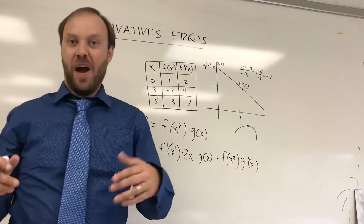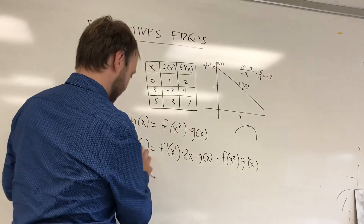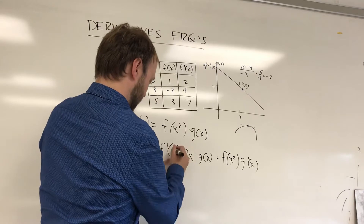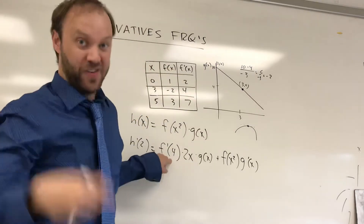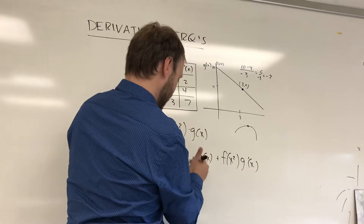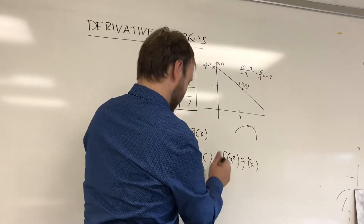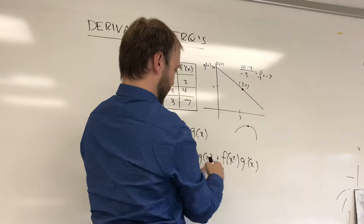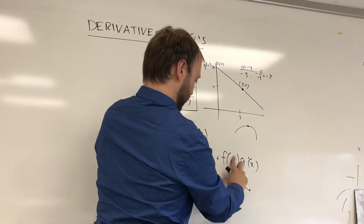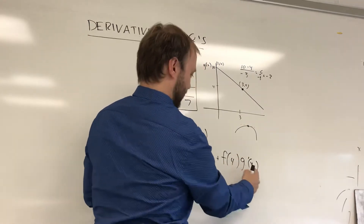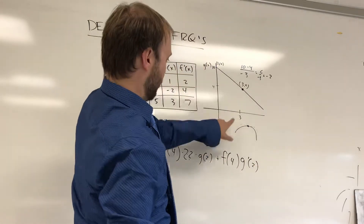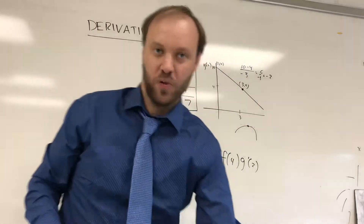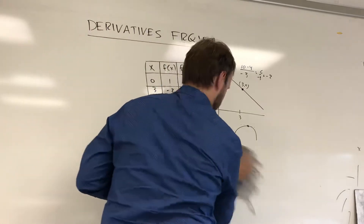If they wanted me to find h prime of 2, I'd substitute 2: 2 squared is 4, so I'd be finding f prime of 4. Then 2 times 2 gives another 4, so f of 4. Plus 2 squared times g prime of 2, which would be the slope at x equals 2. You just apply your derivative rules like normal, and it should match up with what they give you.